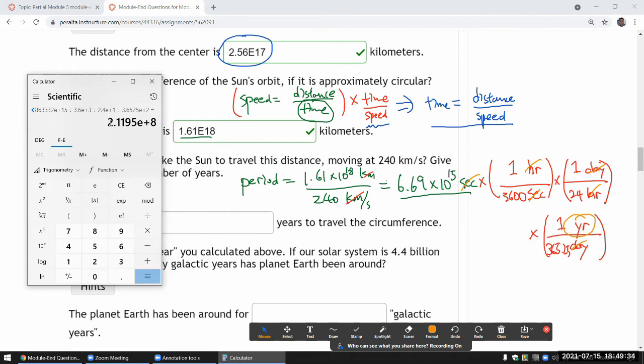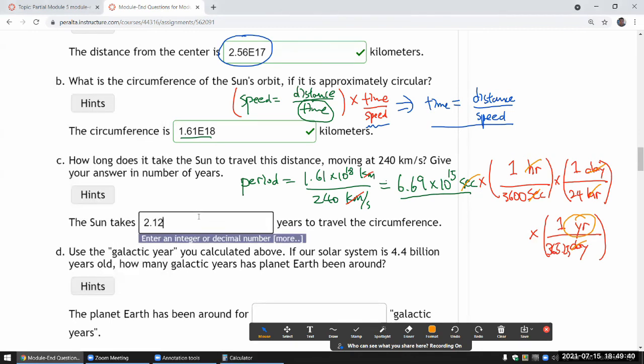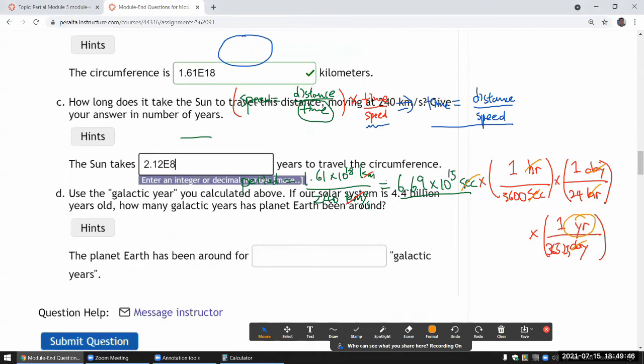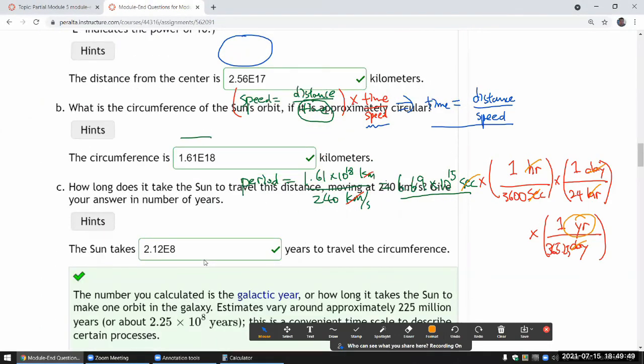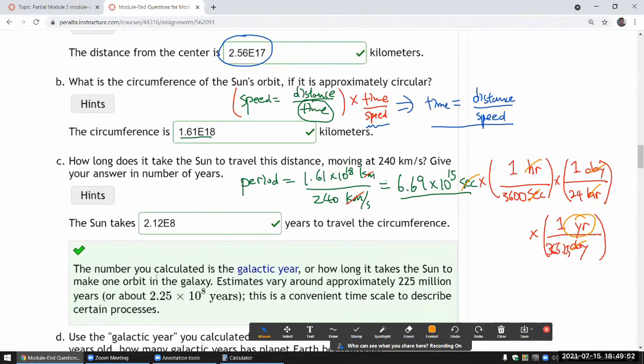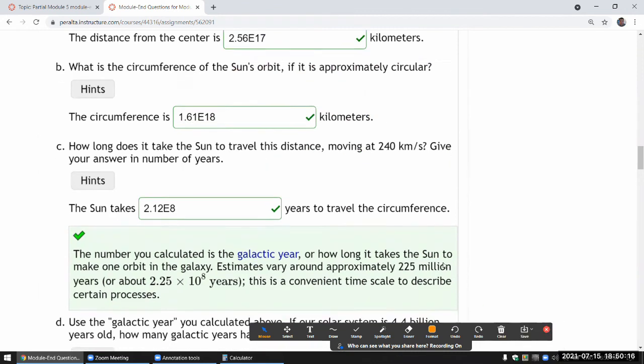Oh wow, that's still quite large. Let me type that in as it is: 2.12 times 10^8 years. So that's like more than a million years—something like 200 million years. There's a feedback, yeah. This is the galactic year. It should be about this many million years. What we calculated here is close, within 10% of that. Again, it's not going to be exact because of randomization of the parameters. And this is a convenient timescale to describe certain processes. The next question is going to be an example of the convenience.